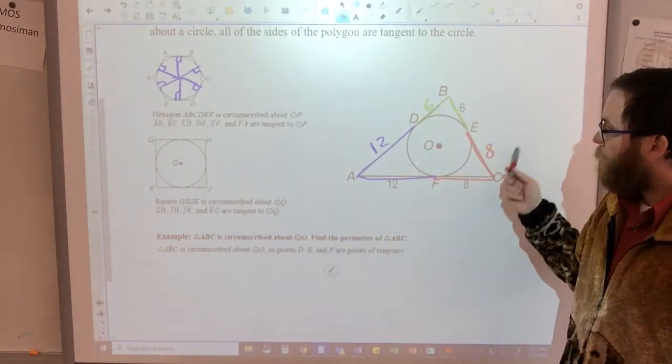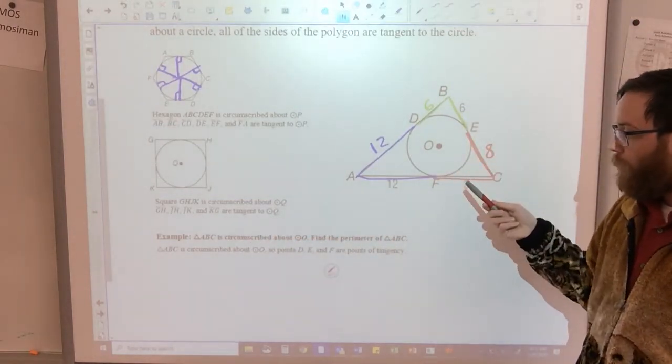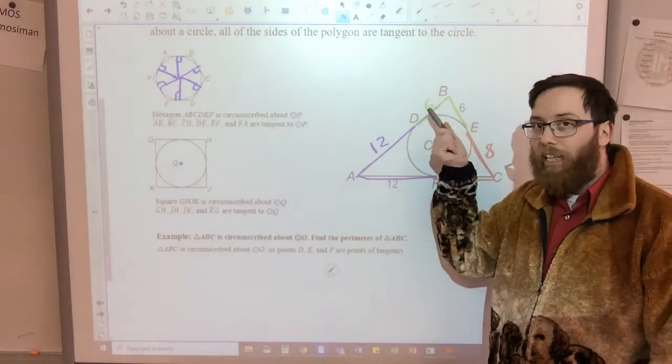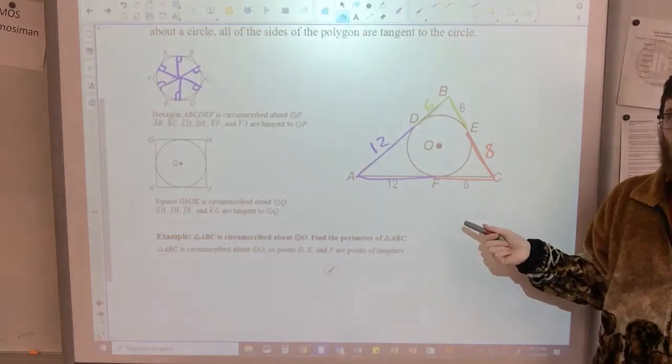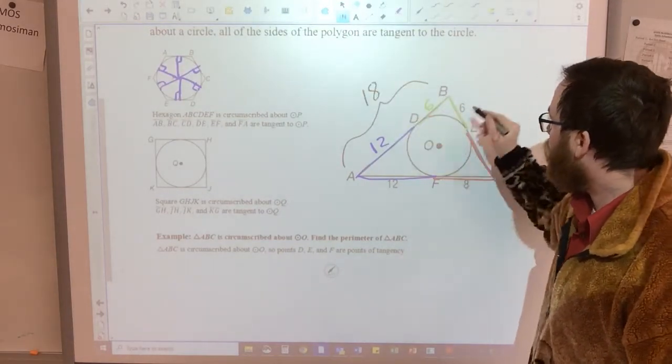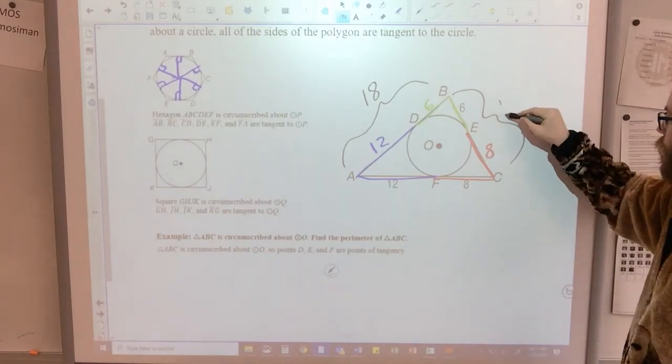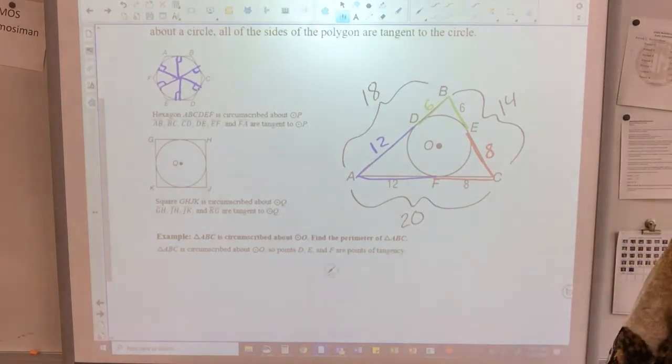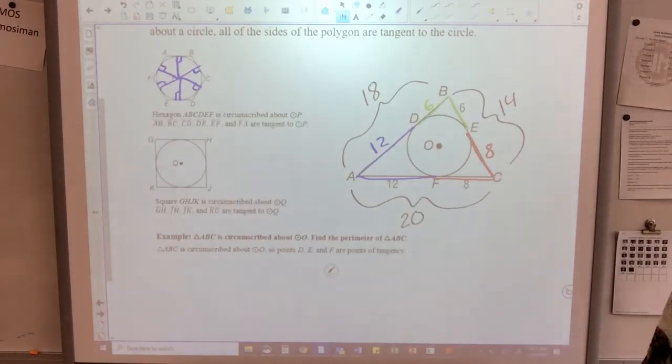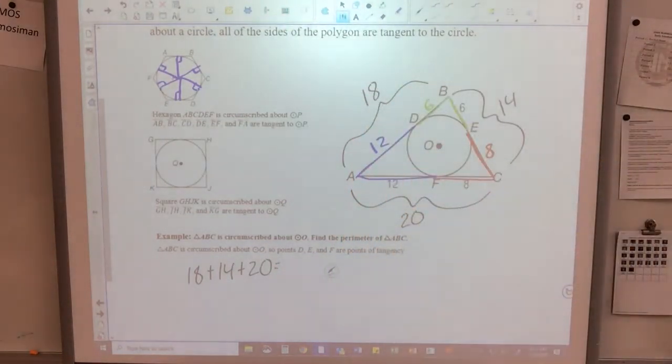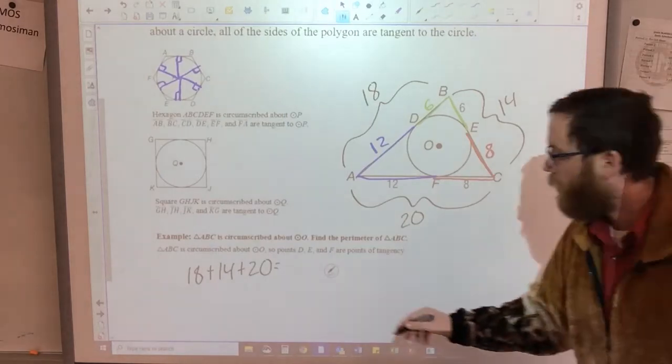And that's what this example is down here. So this example goes with this diagram. ABC is circumscribed about O. Find the perimeter. So the perimeter would simply be adding all of the pieces up, right? That's how you find a perimeter. So this side is 18. This side is 14. And this side is 20. And you would add all of those up. 18 plus 14 plus 20 equals... I didn't find this one, surprisingly enough. Not surprising, I guess, to you. 18 plus 14 plus 20 is 52.